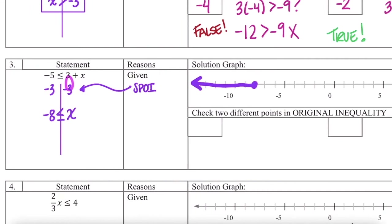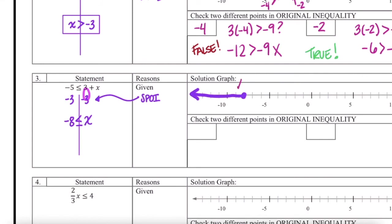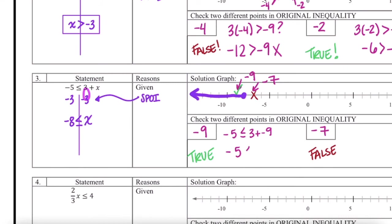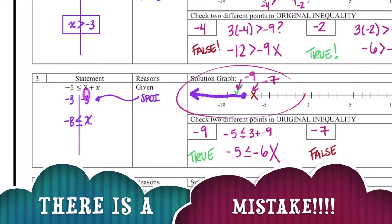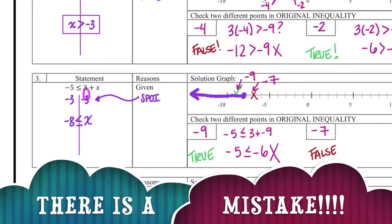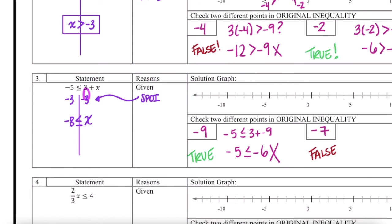Here's where the check comes in handy. I'm going to check two points — negative 9 and negative 7. According to my (incorrect) graph, negative 9 is on my line and should make it true, and negative 7 is not on my line and should make it false. Let's see: is negative 5 less than or equal to 3 plus negative 9? Is negative 5 less than or equal to negative 6? No — this is not true; negative 5 is greater than negative 6. If this happens, that means there is a mistake. When I went to graph the line, I wasn't thinking about the fact that the variable is on the other side. If negative 8 is less than or equal to x, that means x is greater than or equal to negative 8.